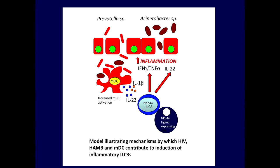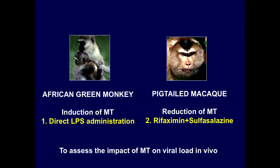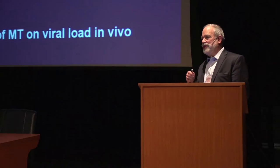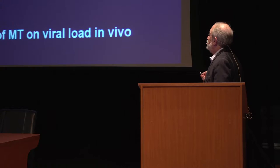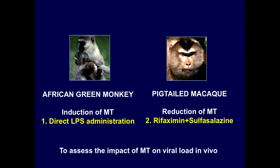In the final parts of my talk, I want to focus on the therapeutic applications and where we think this can go. This is work done in collaboration with Ivana Pendria's lab in Pittsburgh using two different monkey models to look at the role of microbial translocation and alteration of gut microbiome. We've been using a single viral strain to infect the non-pathogenic African green monkey and then the pigtailed macaque, in which we can induce microbial translocation — either through direct LPS administration or through the use of alcohol. I'll show you data today on the reduction of microbial translocation using a combination of rifaximin and sulfasalazine in pigtail macaques, published a few months ago in PLOS Pathogens.